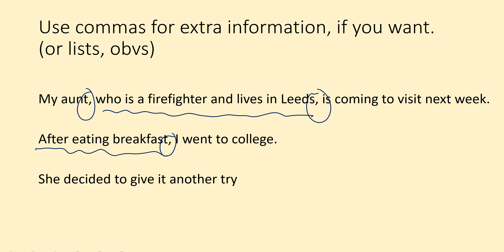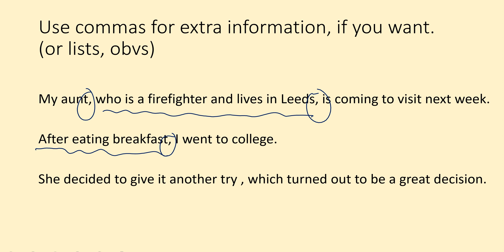Another example: 'After eating breakfast' doesn't make sense on its own, so you need a comma if you're adding it onto the main sentence. And: 'She decided to give it another try, which turned out to be a great decision.' This shows you can have extra information at the end instead of the beginning. 'She decided to give it another try' makes sense alone, and 'which turned out to be a great decision' adds opinion. So it's really good to do a comma and then give a little bit of an opinion — like 'unfortunately' or 'luckily'.